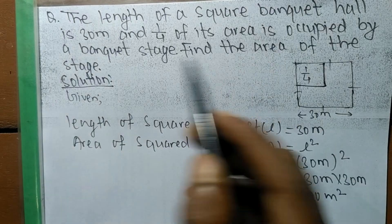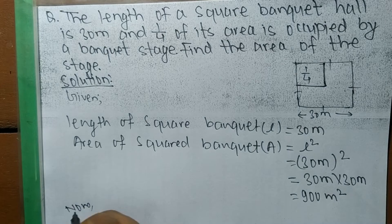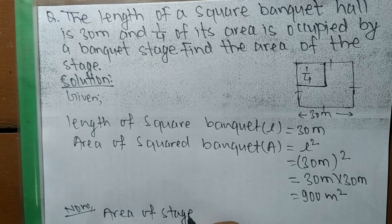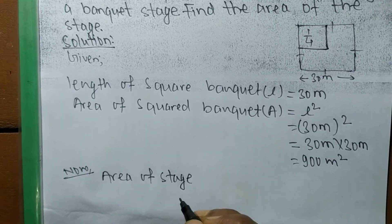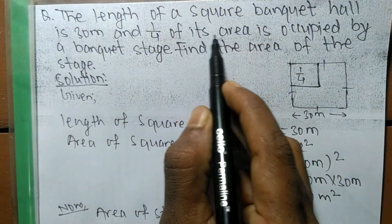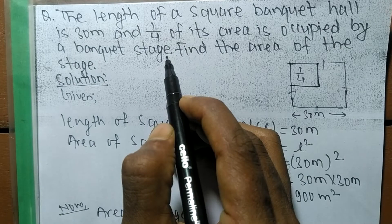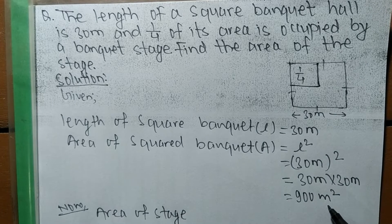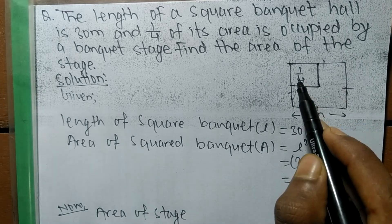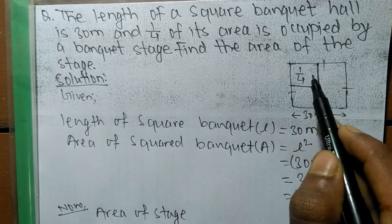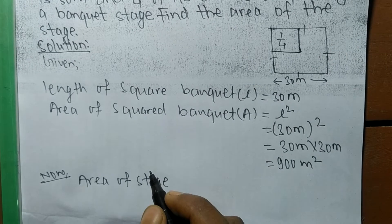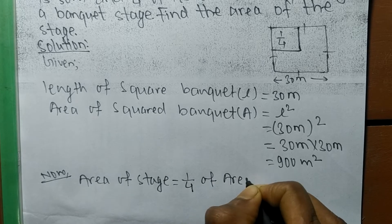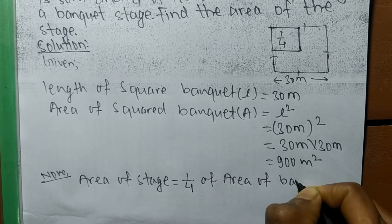Now we have to find out the area of the stage. The condition given is that 1/4 of the area is occupied by the banquet stage. The whole area of the banquet is 900 meter square, and that portion is occupied by the stage. So the area of the stage is equal to 1/4 of the area of the banquet.